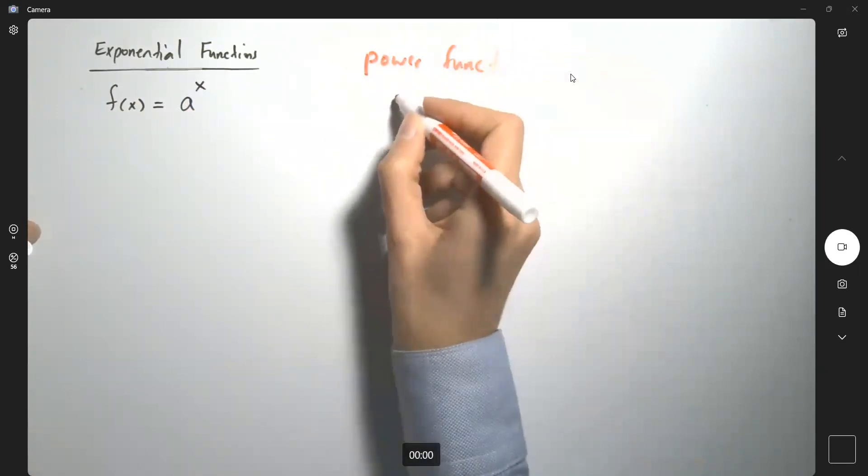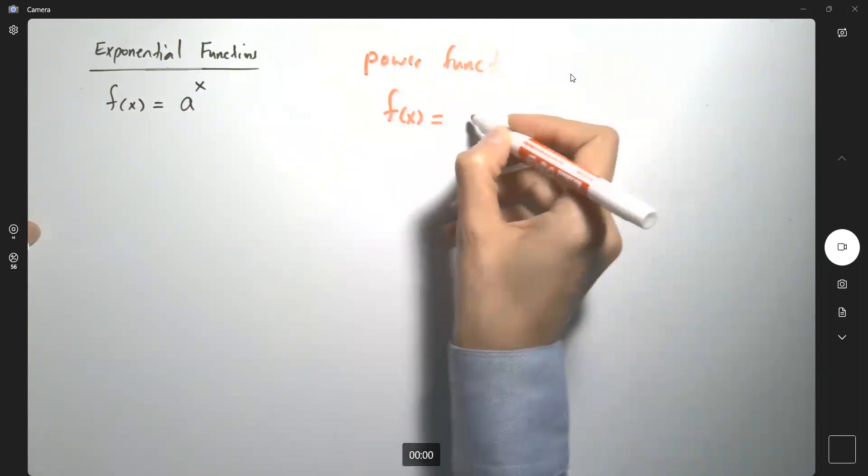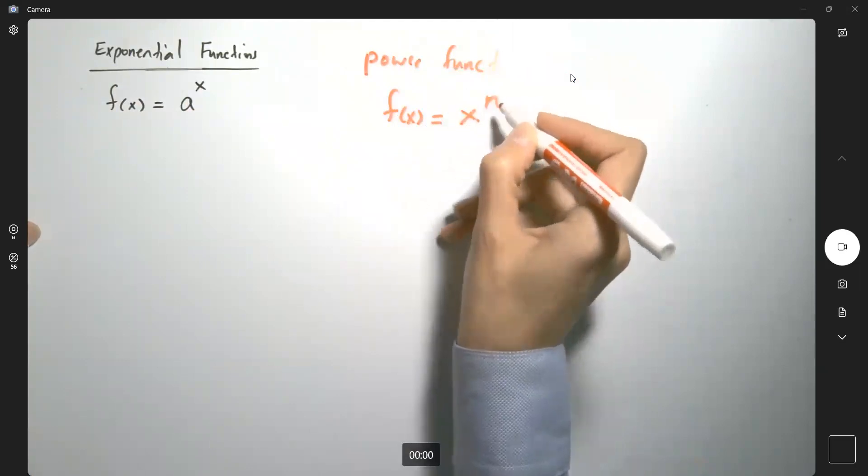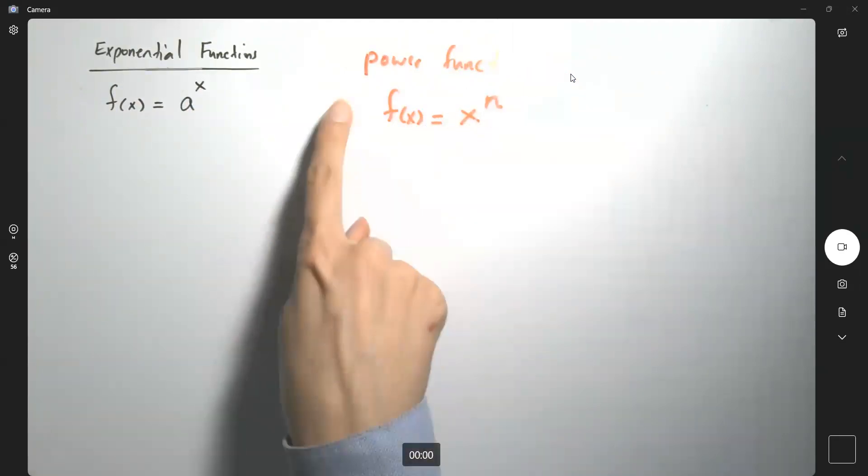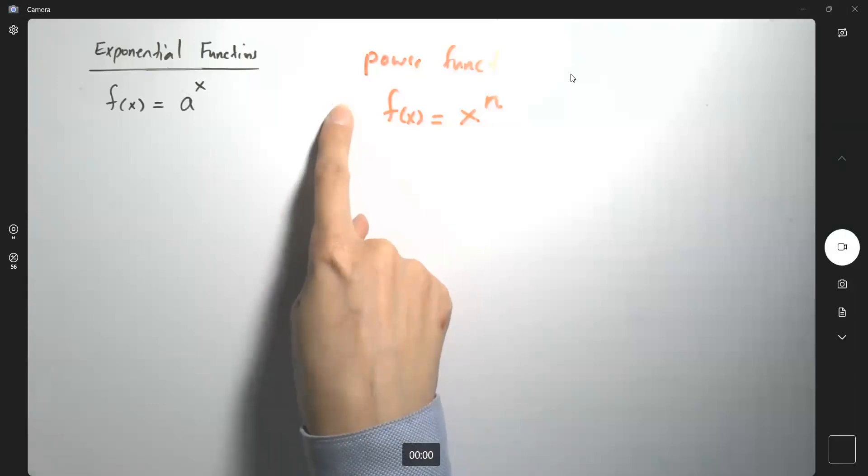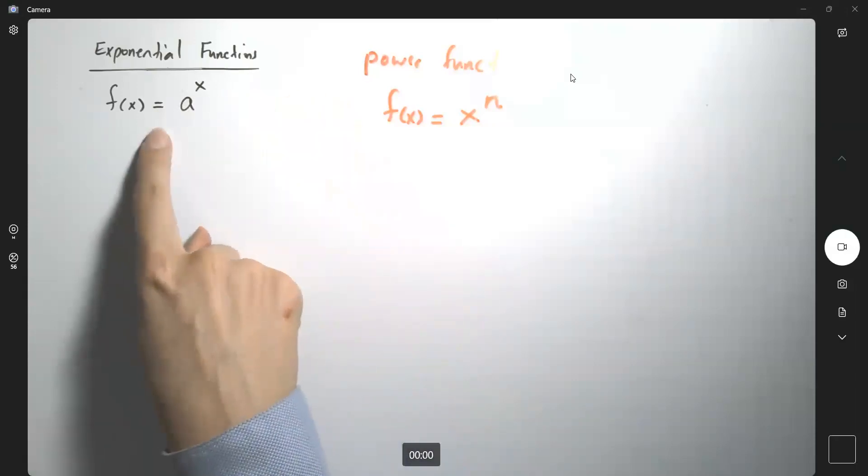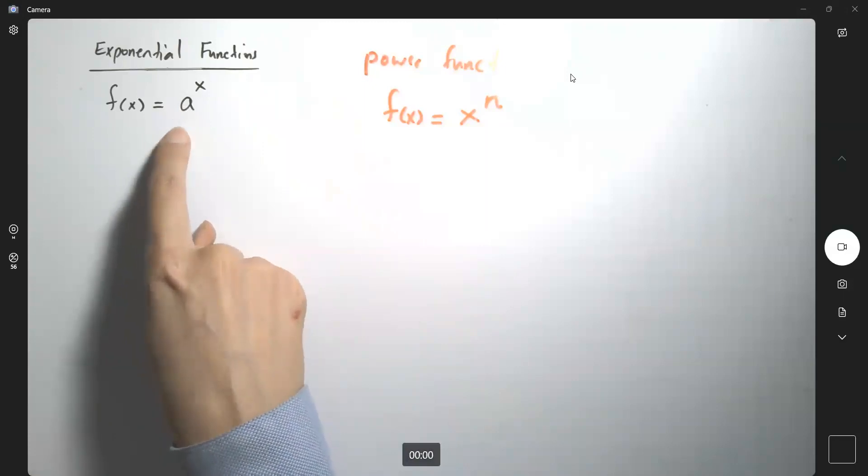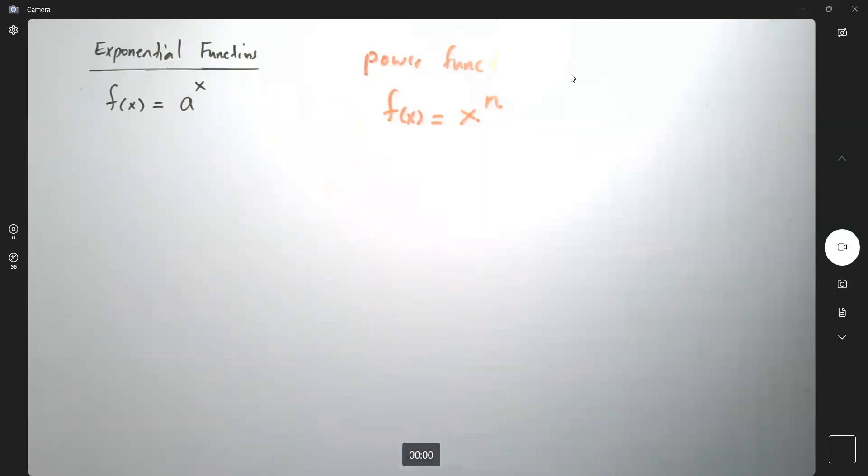A power function is of the form f(x) = x^n. This is called a power function, and this function is called an exponential function. You have a raised to some exponent.